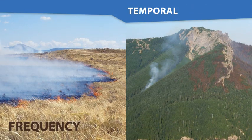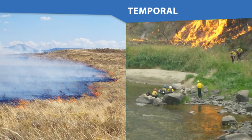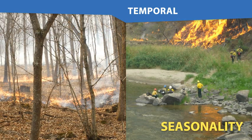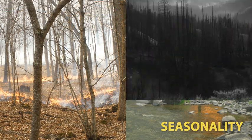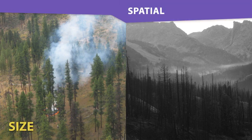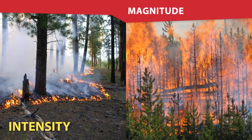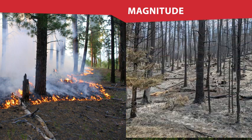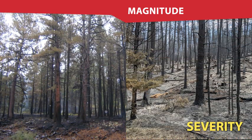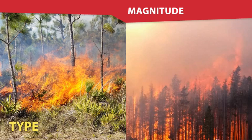Fire frequency is how often fires occur. Seasonality is the time of year that fires occur. Size is how big or small the fire is. Pattern of burn is the pattern of severity and effects across the fire area. Fire line intensity is the heat released. Fire severity is the magnitude of the effects of the fire on different things like plants, animals, soil, people, etc. And fire type is the pattern of the flaming front, or if it's a ground, surface, or crown fire.